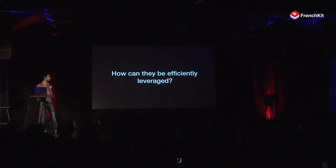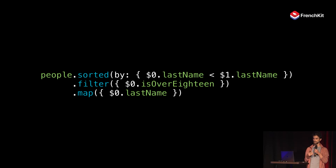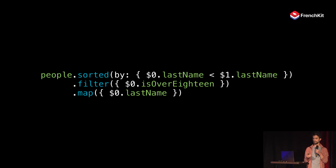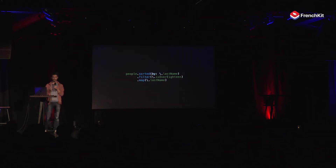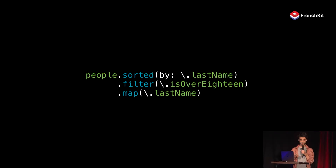What I want to show you is how key paths can be efficiently leveraged, because I don't see many people using them in their code base, and it's a shame because they are kind of awesome. The example I'm going to take is data manipulation, because it's a topic we all know about. In Swift's standard library, we have great generic functions to manipulate data — sorting, filtering, mapping — and they work with closures. The only issue is that you need to define functions inline, which means extra syntax: curly braces, dollar zeros, dollar ones. With key paths, maybe we could do better and make it look like something much cleaner. So how can we implement it?